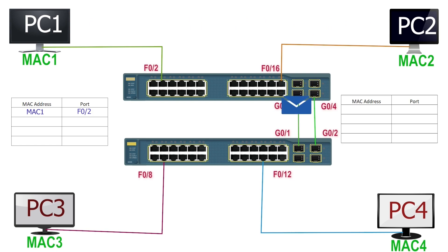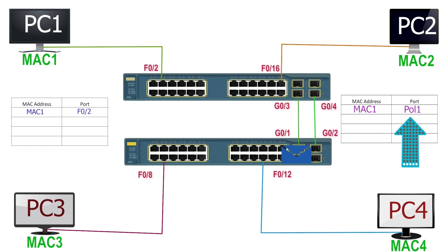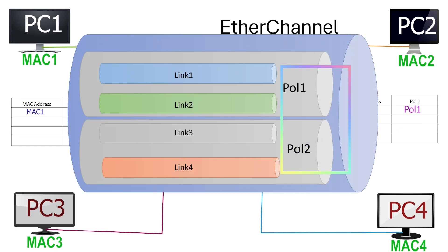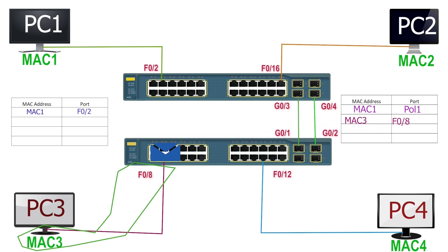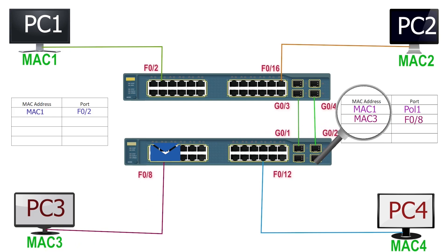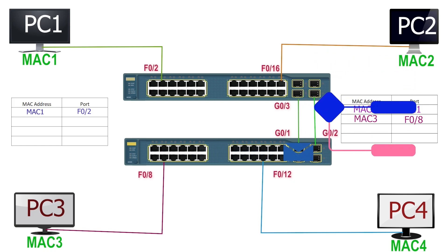Suppose the EtherChannel forwards the frame from G0-3. The frame reaches S2 on G0-1. Although S2 received this frame on G0-1, it will not add G0-1 to the CAM table. Instead, it will add Pool 1 to the CAM table. Pool is a term EtherChannel uses to refer to the group of ports. Since the CAM table has no entry for MAC3, the switch forwards it from all ports apart from the incoming port. PC3 receives the frame and replies. The frame reaches S2 on port F0-8, and the switch adds an entry for MAC3. Since the CAM table has an entry for MAC1, S2 gives the frame to Pool 1, which uses EtherChannel load balancing rules to select the forwarding port.